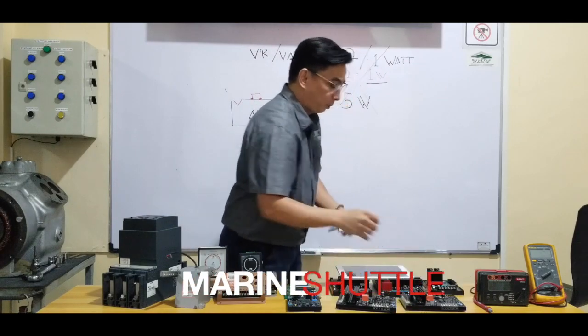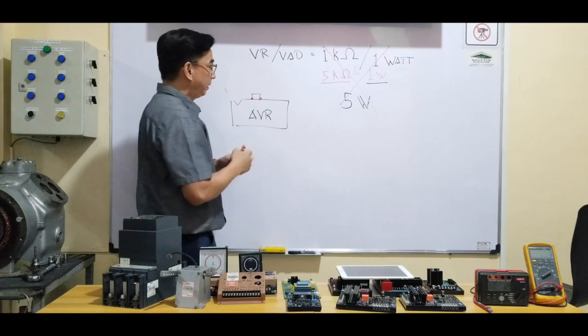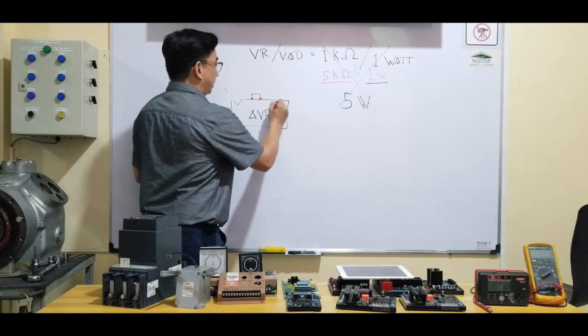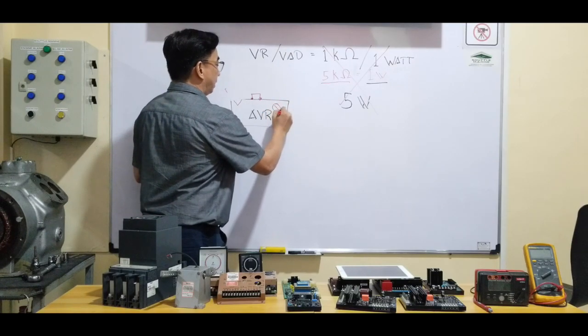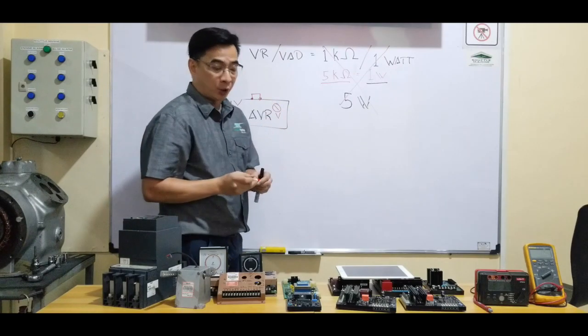So if I don't have the spare potentiometer, I'll just install this jumper. And I'll be adjusting the voltage of my alternator via AVR voltage trimmer.